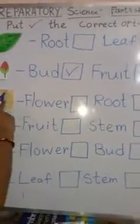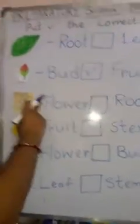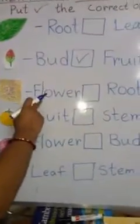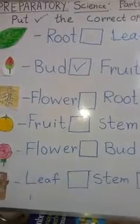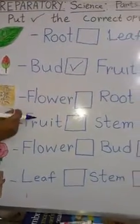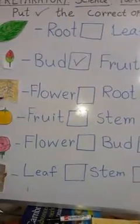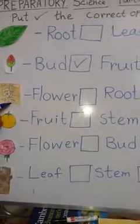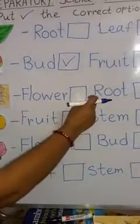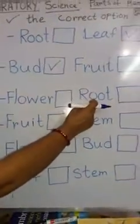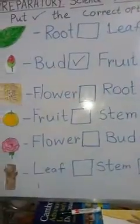Number three: f-l-o-w-e-r flower. See the picture — this is not a flower picture, this is a root picture. R-o-o-t, root. So we put root here.